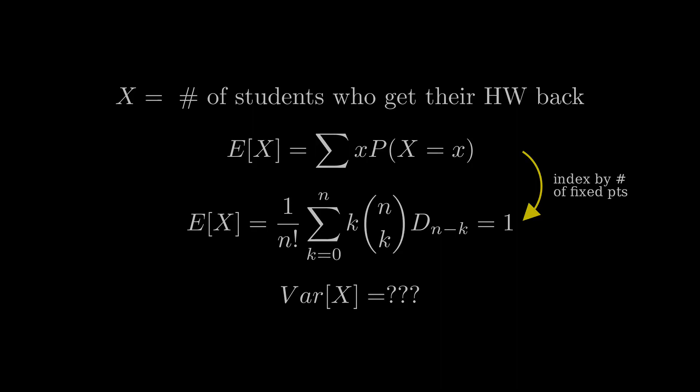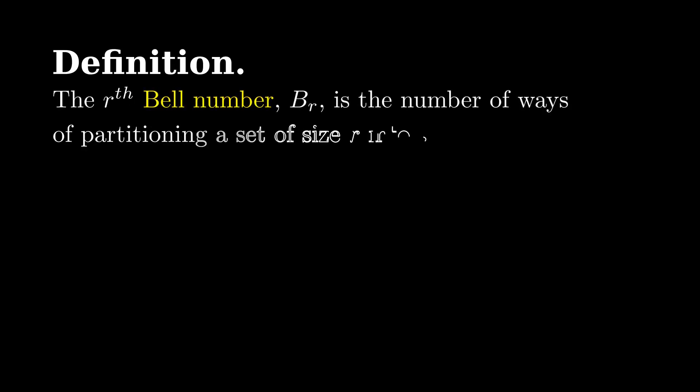To answer that, and a bit more, we're going to use another combinatorial tool. Define b sub r, the rth bell number, as the number of ways of partitioning a set of size r into sets. That's a bit abstract. More concretely, it's the number of ways of putting r distinguishable prizes into bags. We can use as few or as many bags as we wish, but every prize must be in some bag.